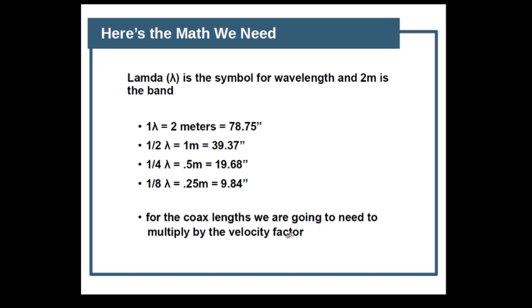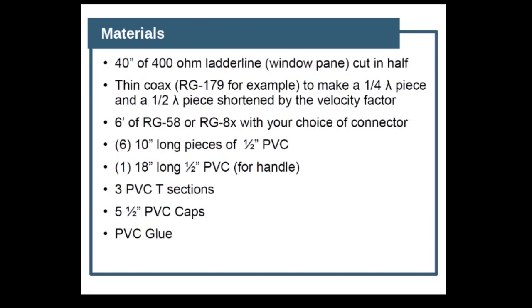Here are the materials we need: 40 feet of 400 ohm ladder line (window pane) cut in half. Thin coax - I like RG-179 because it's cheap and easy to get, it's 75 ohms. We're going to use that to make a one quarter lambda piece and a one half lambda piece shortened by the velocity factor. If you don't know what velocity factor is, look up the type of coax you have and find the specs on the web. Take the actual decimal number, so if it says 79%, multiply by 0.79.